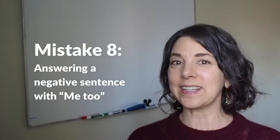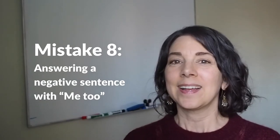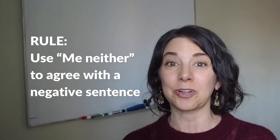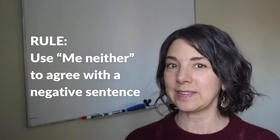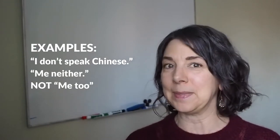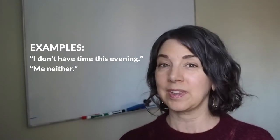Number eight: answering a negative sentence with me too. Similar to the negative questions that we looked at before, if you have a negative sentence and you want to agree with it, we have to use me neither. For example, I don't speak Chinese, me neither. I don't have time this evening, me neither. Sometimes I hear people say, for example, I didn't finish the homework, me too. We can't answer me too to agree with a negative sentence. For a negative sentence, we can agree with me neither. If you don't know this rule, please check out my video and I explain how you can use me neither and other forms like neither do I or I don't either. But remember for this rule that we're not going to answer me too to agree with a negative sentence.